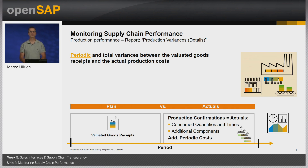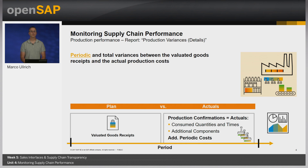Prerequisites to ensure that the report displays full and accurate business data are the execution of a goods issue, goods received invoice run, and a work in process clearing run. You can use the report Production Variances to analyze costs incurred on a specific production lot or all production lots for a material, and to take corrective actions to reduce potential variances. The report Production Variances Details shows a breakdown of total variances between standard cost and actual production costs by variance category.